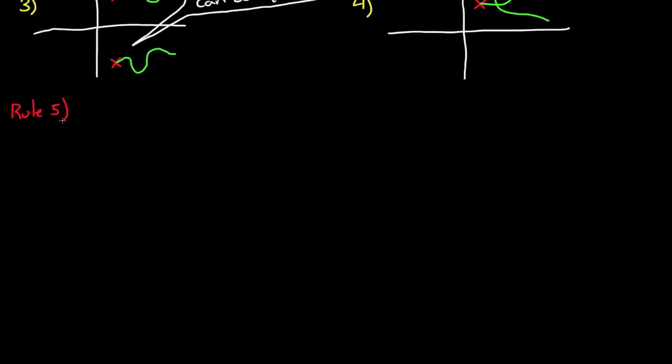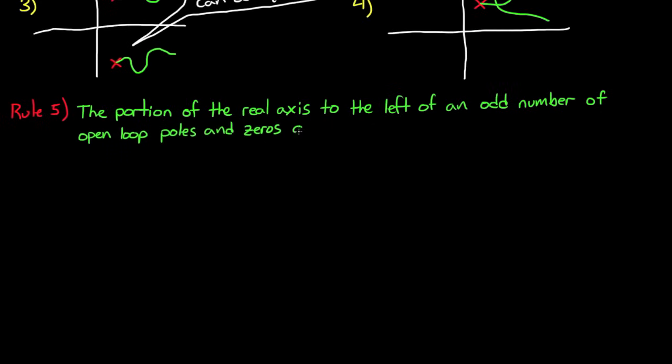And now that brings us to a new rule for this video, rule number five. Rule number five states that the portion of the real axis to the left of an odd number of critical frequencies, that is, zeros and poles of g of s, are part of the locus. This is perhaps my favorite rule, because even though it's hard to state, it's really easy to remember graphically, and it's the first thing that I always do when drawing a root locus.